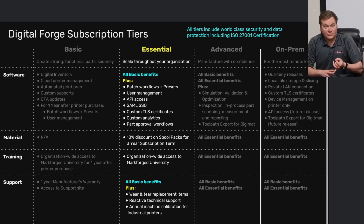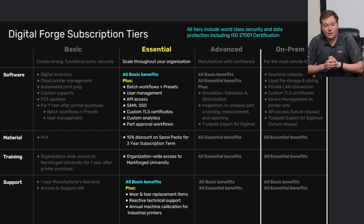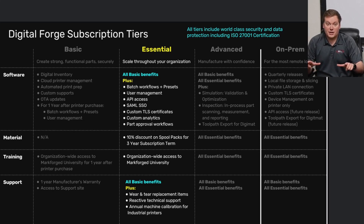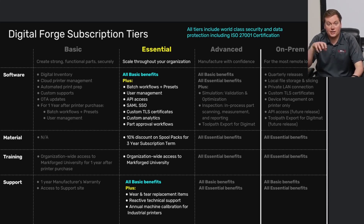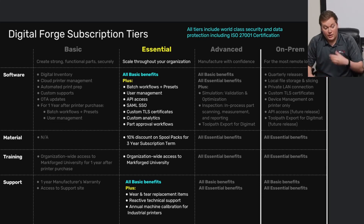The wear and tear coverage means we order those replacement parts — bowden tubes, nozzles, and similar items — for you. You work through us and we escalate tech support cases with Markforge for immediate response. Something new with Essential is the annual machine calibration for industrial printers. It uses a reference bed — a highly precise machine grid system shaped like your industrial print bed — which you scan with the micrometer on the print head to locate the print head in space, adjust offsets, and make the printer more accurate.